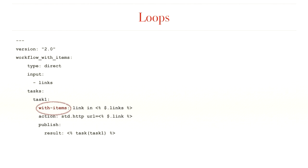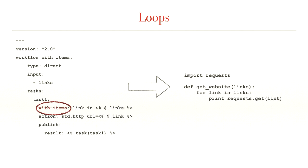Loops: sometimes you want to iterate over a list. In this case, you can use the 'with-items' clause. In this example, you define an input expecting a list of links, and in the task it gets each link and uses the HTTP action to fetch the web content. If you're a Python developer, it's very similar to defining a function and using a for loop.